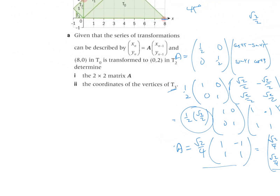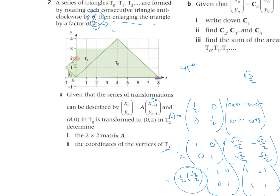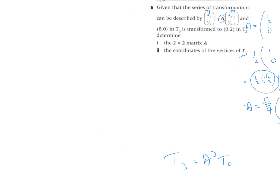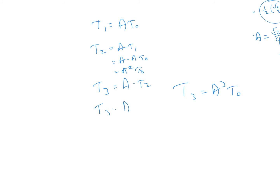Now we want to find the corners of T3. We know that T1 = A × T0, T2 = A × T1 = A² × T0, and T3 = A × T2 = A³ × T0. So T3 = A³ × T0 — each successive triangle is just the previous one multiplied by A, building up the power of A.